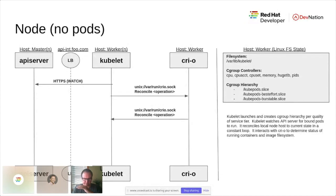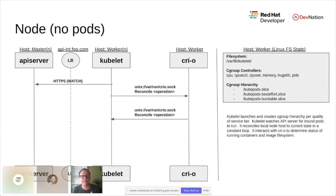The communication between the kubelet and the API server occurs through a different load balancer because it's internal traffic to the cluster — that's called the API internal load balancer. The kubelet on that same host then interacts with a container runtime. The relationship between the kubelet and the container runtime is what controls ultimately getting your pod executing.